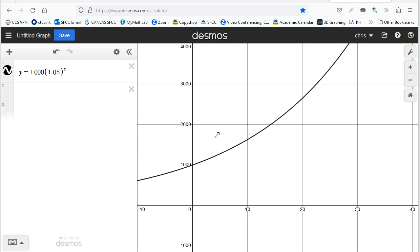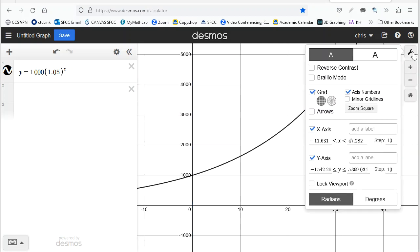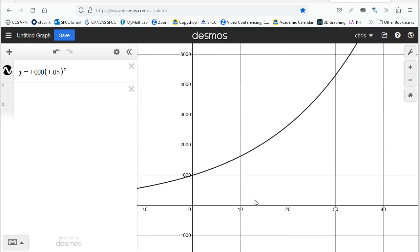Remember you're gonna hold down your shift button and then move this around. Or you could use this little wrench and change your X and Y values here. So this shows the growth of my money over a certain time period, 10 years, 20 years, 30 years.